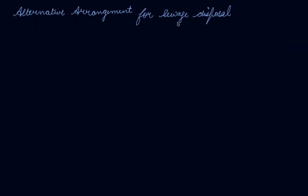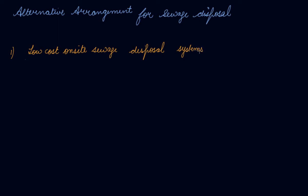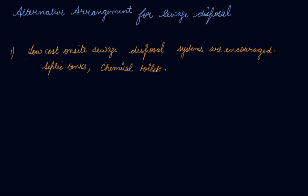Now, the alternate arrangements for sewage disposal — what are the alternate things we can follow to reduce wastewater? We can use low-cost on-site sewage disposal systems, which are encouraged. For example, septic tanks, chemical toilets in which excrete gets automatically treated, and composting pits.